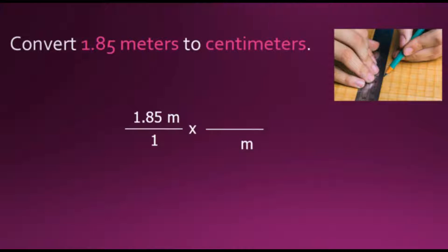To cancel out meters, any time in a fraction we have a numerator and a denominator factor that are the same, they can be canceled out because their value is equal to 1. Relying on our prefix table to determine equivalent values between meters and centimeters, we determine which one is bigger. Meters has no prefix on it, so it is the base and it is the leftmost.